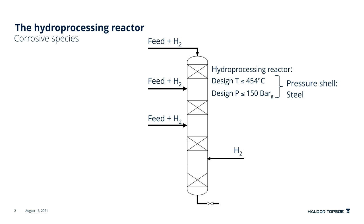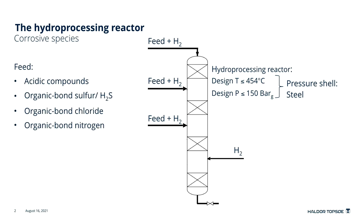Our feed contains corrosive species. It can be acidic compounds, it can be organic-bound sulfur or H2S. It may be organic-bound chlorides and organic-bound nitrogen. These species are converted in the hydroprocessing reactor, becoming CO2, H2O, H2S, HCl, and NH3.